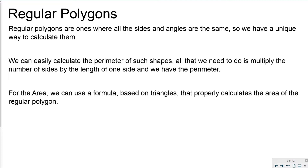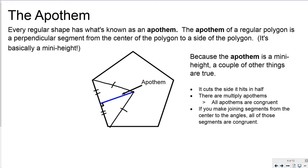For the area we can use a formula based on triangles that properly calculates the area of a regular polygon. A new piece of information is called the apothem. Every regular shape has what's known as an apothem — it's a perpendicular segment from the center of the polygon to a side of the polygon. It's basically a miniature height: it forms a 90-degree angle with the side, cuts the side in half, and goes directly to the center of the regular polygon.